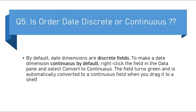Many times the interviewer doesn't ask you directly about discrete and continuous — they ask about a specific field. For example: is order date discrete or continuous? By default, order date is a discrete field, but we can change a date dimension to continuous by right-clicking on it and choosing continuous.